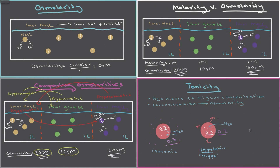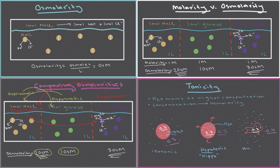Finally, if we place a cell with osmolarity 0.3 into a hyperosmotic solution — say osmolarity 0.4 — the outside is more concentrated. Since water moves toward higher osmolarity, water will leave the cell, and the cell shrivels up. Whenever the cell loses water to the outside solution, we say the solution is hypertonic.